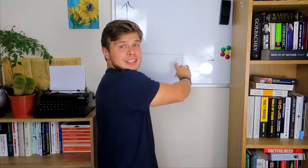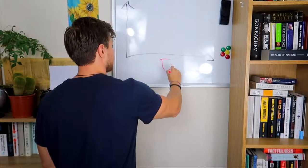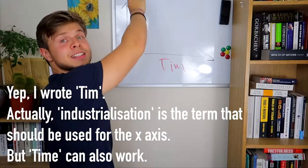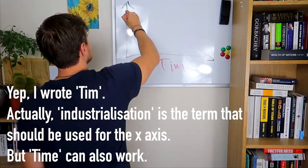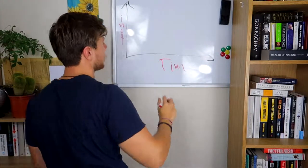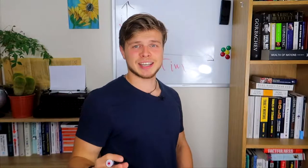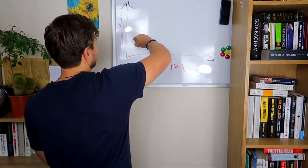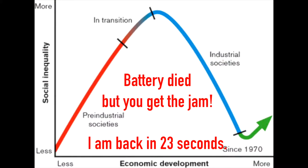So on the x-axis is time, and on the y-axis is the level of inequality. What Kuznets actually says is that inequality follows a bell curve, or an inverted U-curve. Inequality firstly goes up, then it kind of stagnates, and then it goes down.